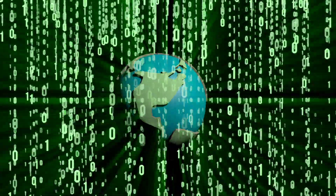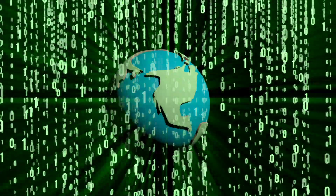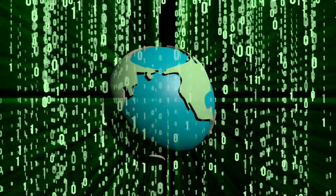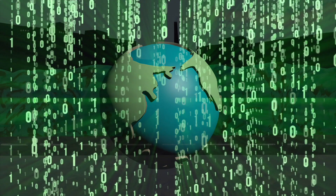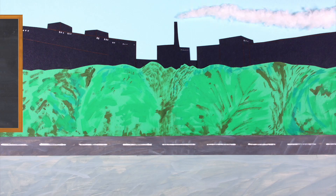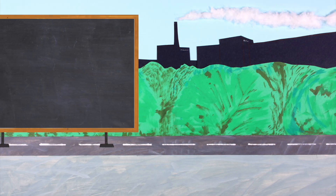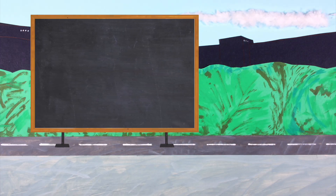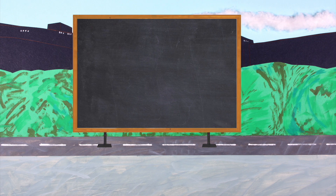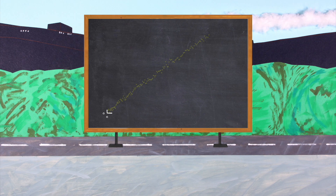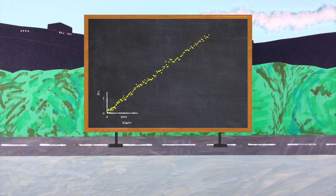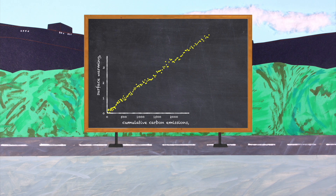We can use computer climate models to understand how the climate system responds to carbon emissions. These climate models reveal a simple relationship: the more carbon we emit, the greater the rise in global mean surface temperature.